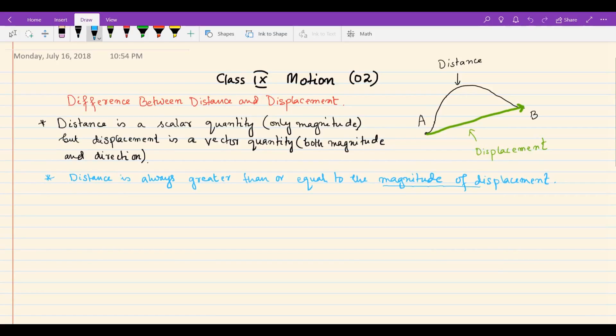Distance is always greater than or equal to the magnitude of displacement. Note that it's the magnitude of displacement, not just displacement itself.